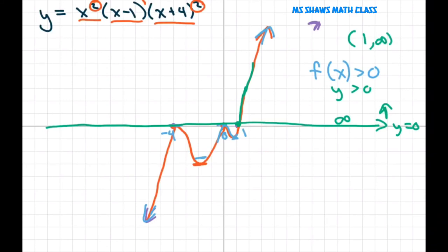Now, where is our y or f of x negative? Well, that's below this y equals 0 line, which is this whole curve here. This whole thing. So that's negative infinity to 1.